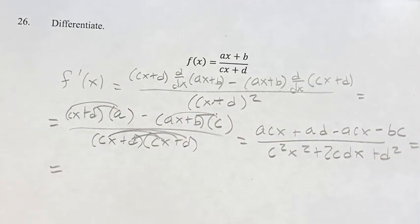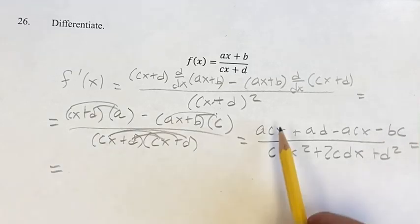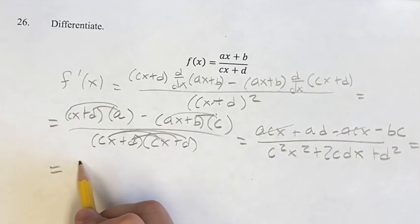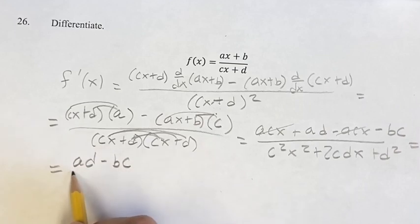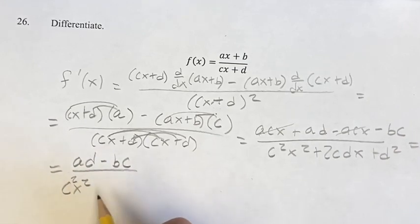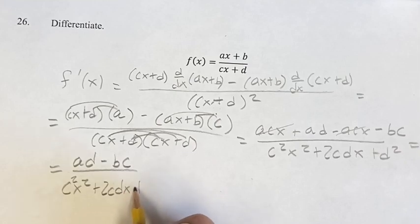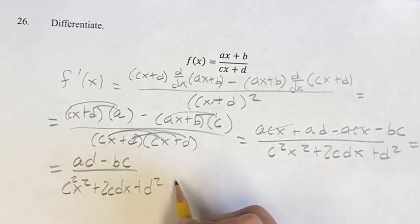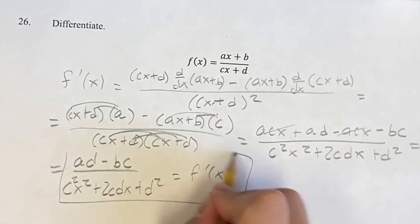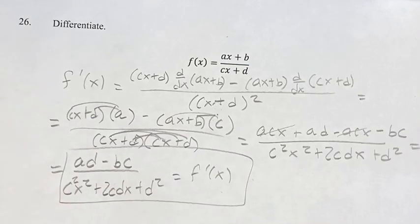One last simplification to make: acx minus acx is 0, so we're just left with ad minus bc over the same denominator, (cx plus d) squared. This is your derivative. As always, thank you for liking and subscribing, and I'll see you in the next video.